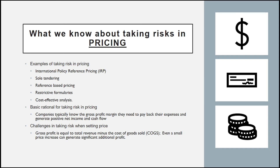An example of risk in establishing price is sole tendering, which means acquiring raw materials from only one provider, which limits multiple expenditures. This process ultimately reduces gross production expenditure, resulting in a shift of the price of the product, whether it is positive or negative, depending on the amount of pricing spent to acquire the raw materials.